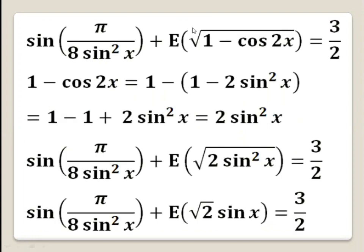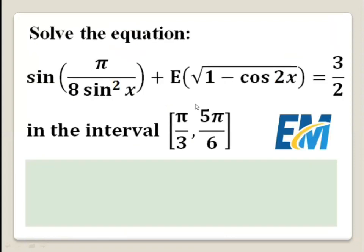The first step: we will simplify the term inside the integer part function. So 1 minus cosine 2x equals 1 minus (1 minus 2 sine squared x), which gives 1 minus 1 plus 2 sine squared x. Cancelling the 1 and minus 1, we get 2 sine squared x. Now the equation can be written as sine of pi over 8 sine squared x plus the integer part of the square root of 2 sine squared x, equals 3 over 2.